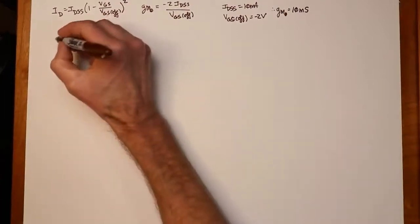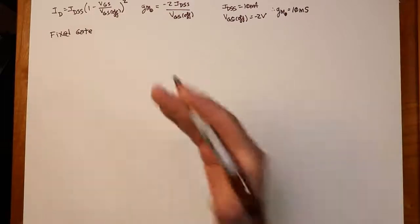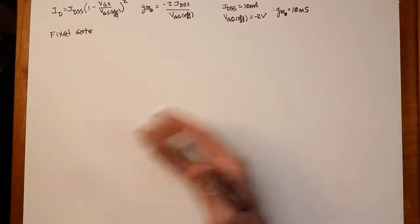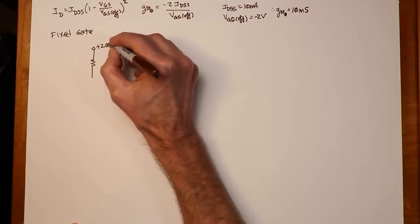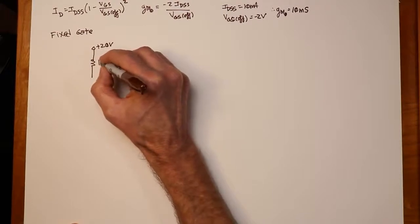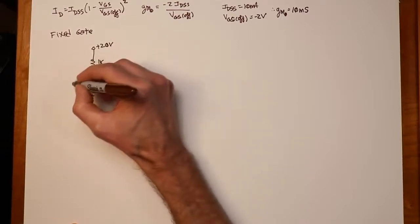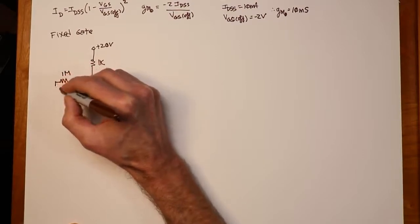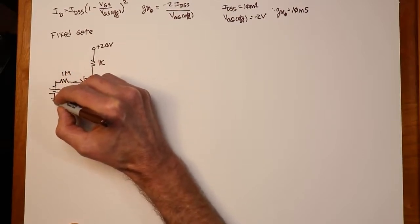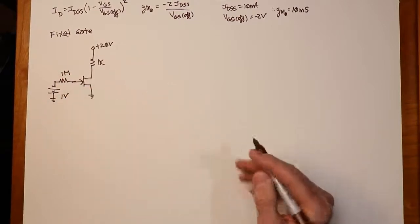Our first circuit is the simplest and it's referred to as fixed gate bias. All we do is put a fixed negative voltage on the gate of the transistor. We'll use a 20-volt power supply as VDD, a 1k ohm drain resistor, the FET source going to ground, a 1 megaohm resistor feeding the gate, and a negative power supply of minus 1 volt attached to the gate.